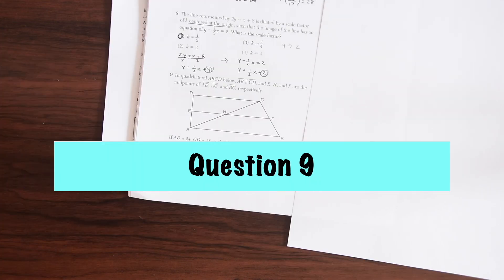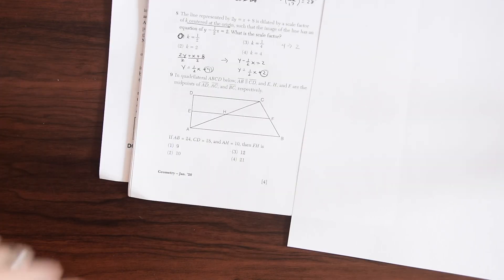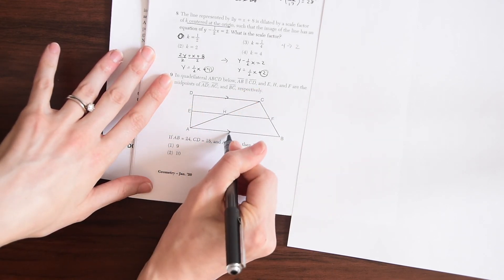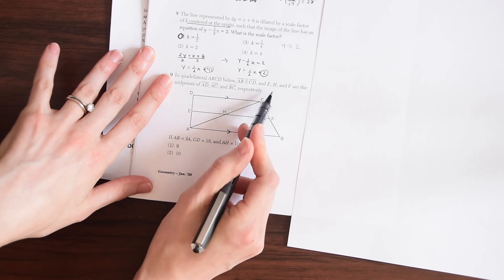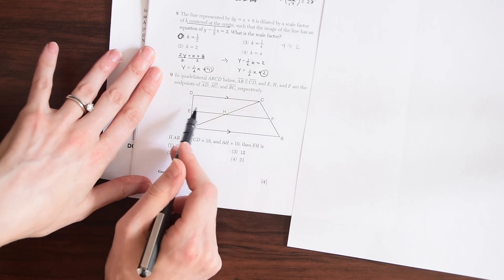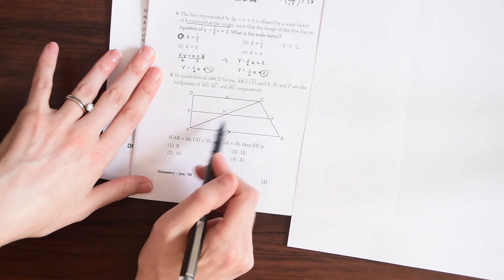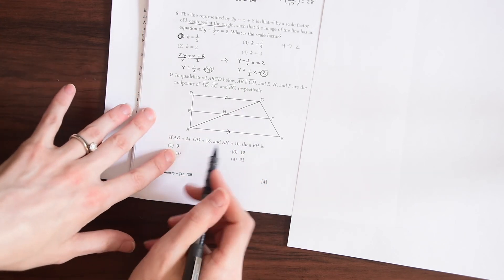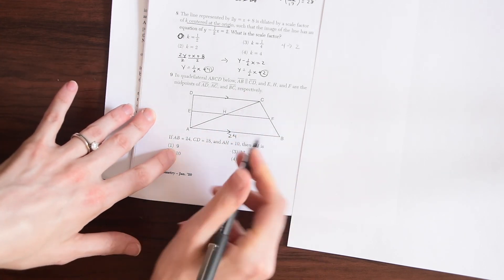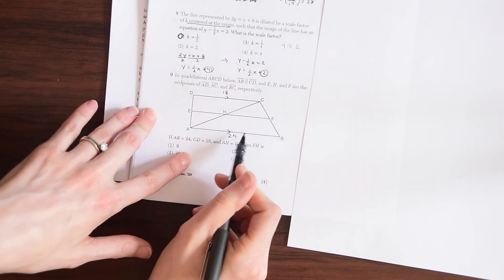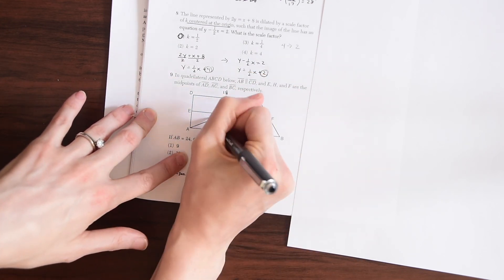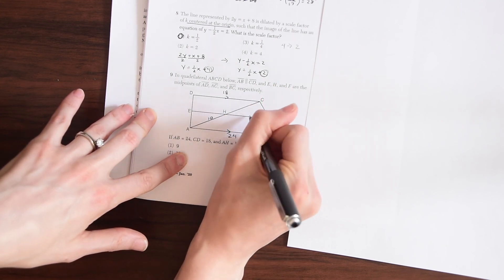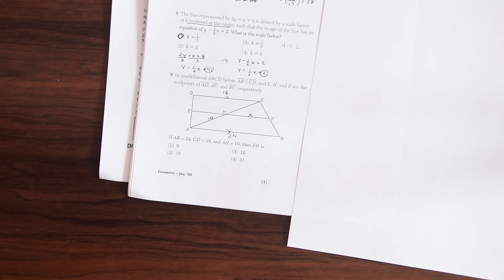For question number nine, in quadrilateral ABCD below, AB is parallel to CD. So AB is parallel to CD. And E, H and F are the midpoints of AD, AC, and BC respectively. If AB equals 24, CD equals 18, and AH is 10, then FH is, we want to find this value right here. So we're just going to call that x. So remember, we know that this is the midpoint. So these are all midpoint. This is midpoint, this is midpoint, and this is a midpoint. So if 10 is on this side, we know 10 can be on this side also.